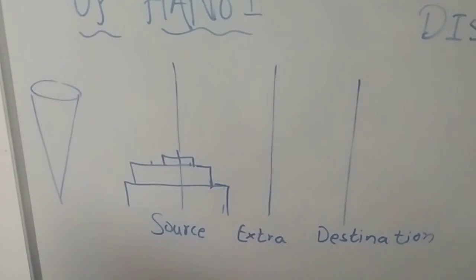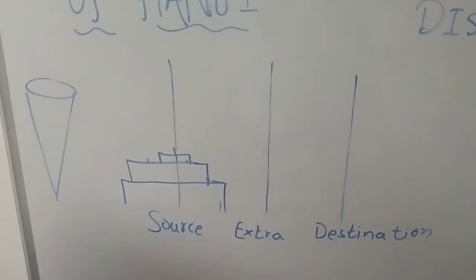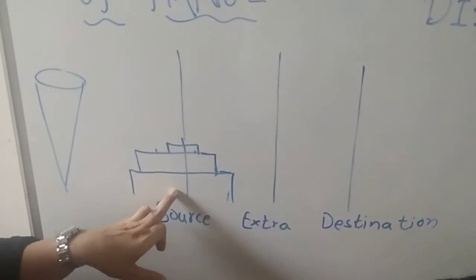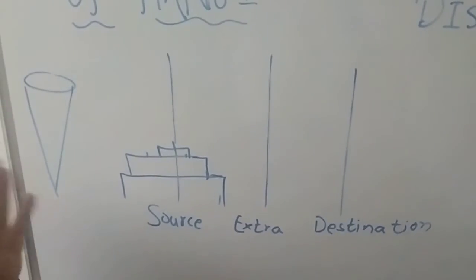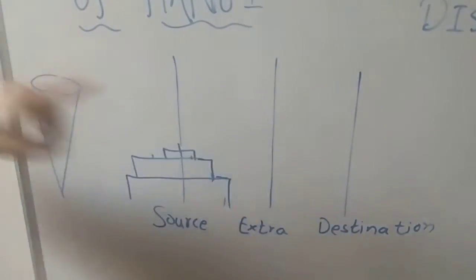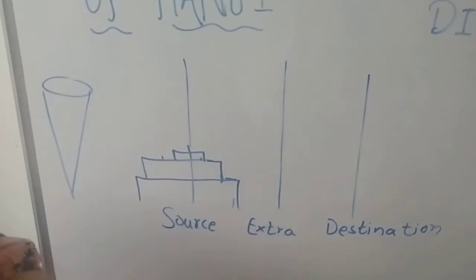Second rule is, only the uppermost disc can be moved. Uppermost means, if you want to move this disc towards destination, it can't be moved. First, you have to move the upper disc, then you have to move the smaller disc. In this way.